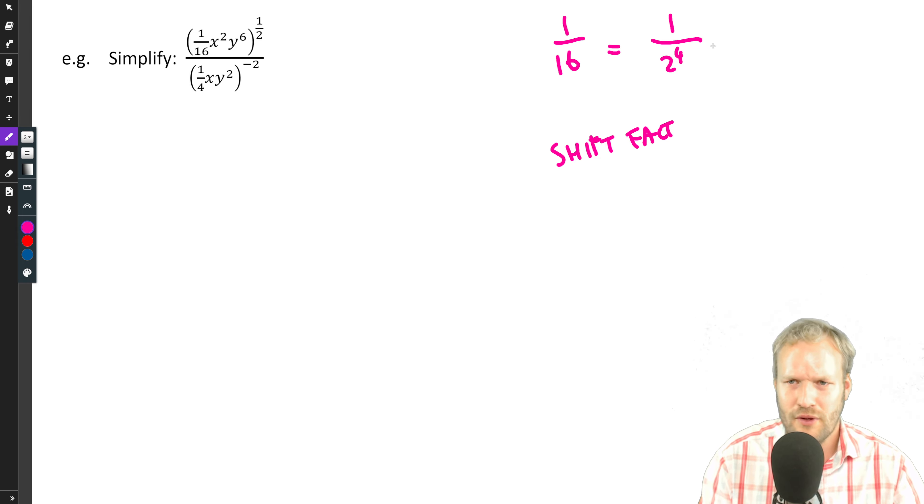Then we can use our exponent laws and say, well, one over two to the four is the same as two to the negative four.